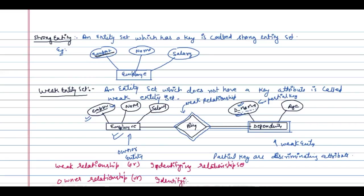The cardinality ratio from the owner entity set to the weak entity set is one to many. For every employee we can have more than one dependent, therefore it is a one-to-many relationship. The participation of the weak entity set to the identifying relationship set is always total participation.